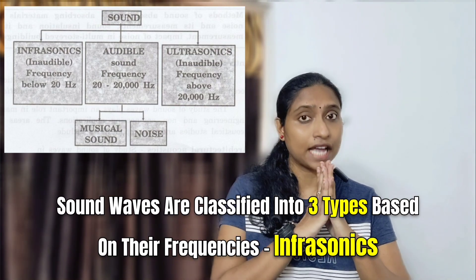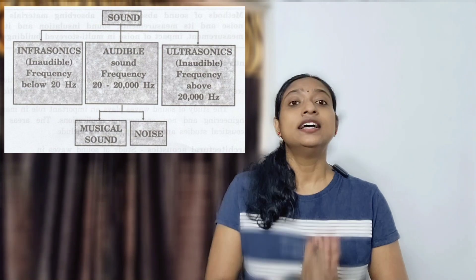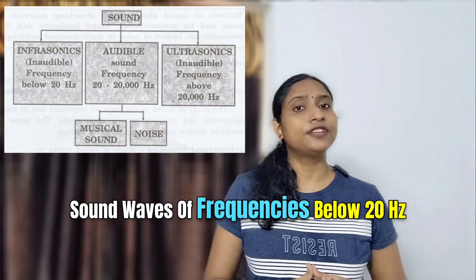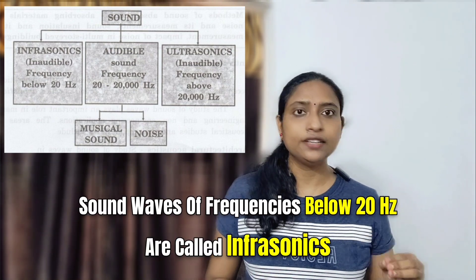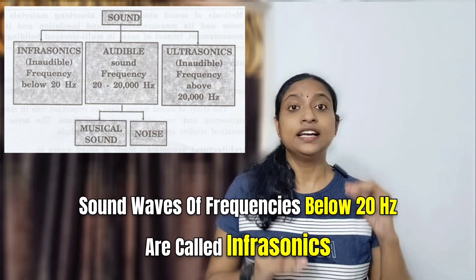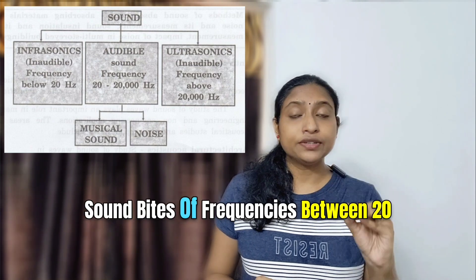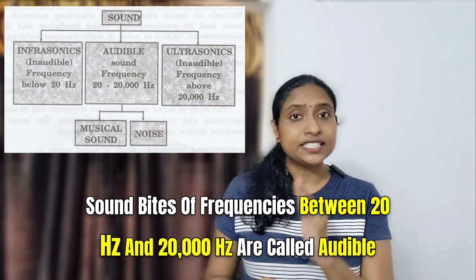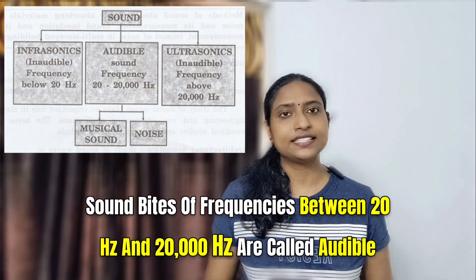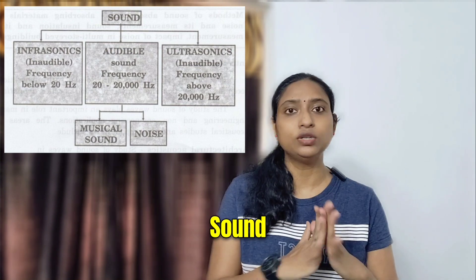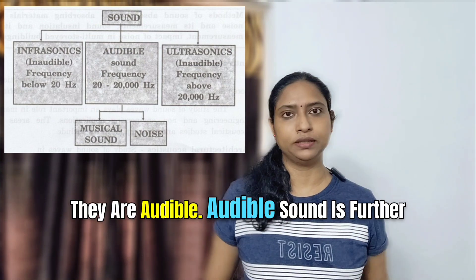Infrasonics, audible sound, and ultrasonics. Sound waves of frequencies below 20 Hz are called infrasonics. They are inaudible. Sound waves of frequencies between 20 Hz and 20,000 Hz are called audible sound. They are audible.